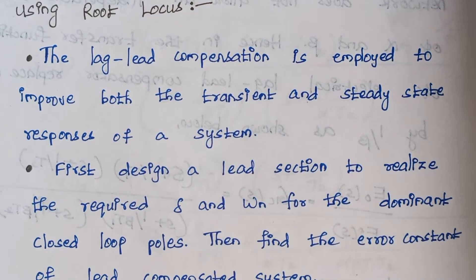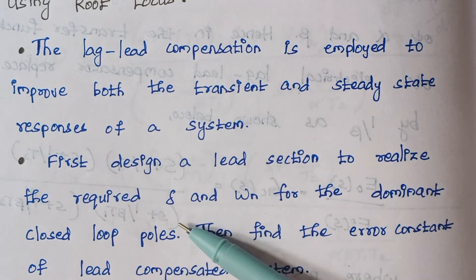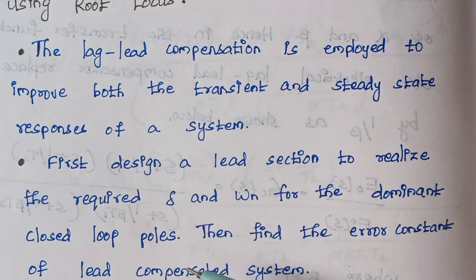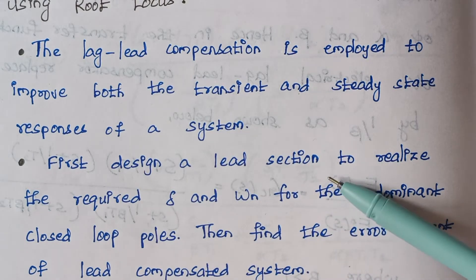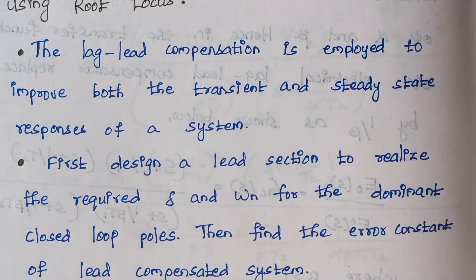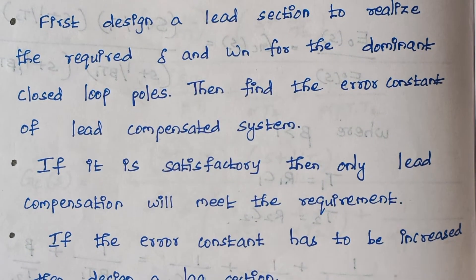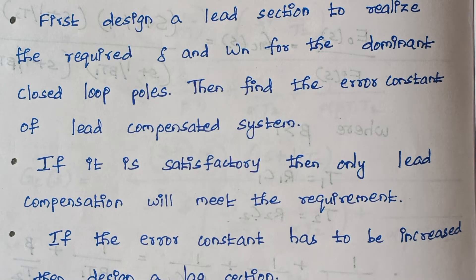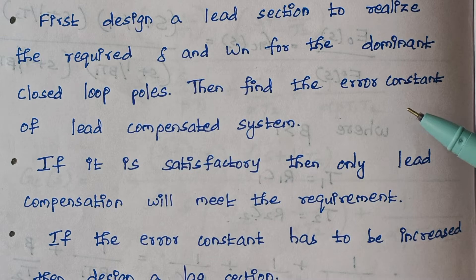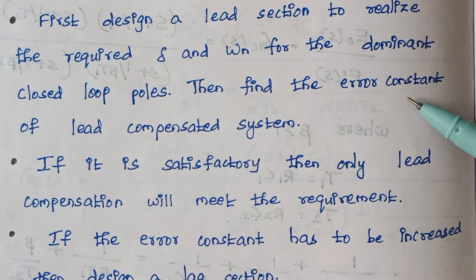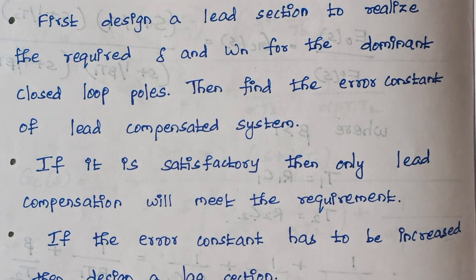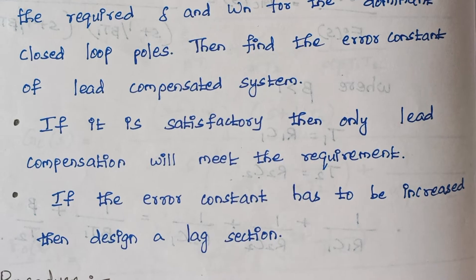The first step is to design a lead section to realize the required zeta and omega_n for the dominant closed-loop poles. Then we find the error constant of the lead section. If the error constant meets the specification, then only lead compensation will meet the requirement. If the error constant has to be increased and requirements are not satisfied, then we move to designing the lag section.